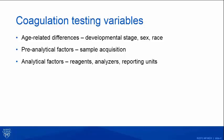What are the variables inherent to pediatric coagulation testing? The age-related differences as a child develops, sex-related changes, and possibly racial differences. Pre-analytical factors are probably more prevalent in children than adults, especially with sample acquisition — drawing blood from a child is never a fun activity. And analytical factors inherent to laboratories: the reagents used, the platforms used, and the reporting units may vary between different laboratories.